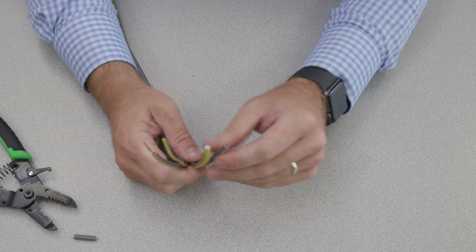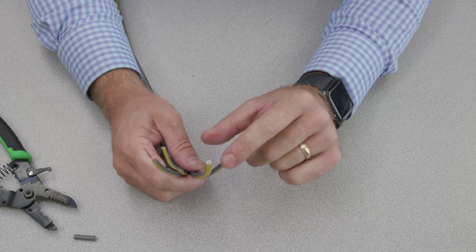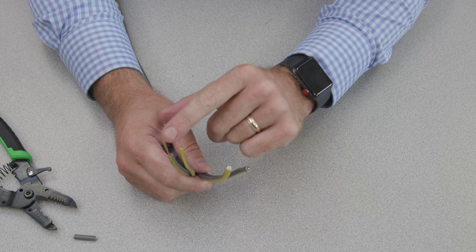Now you'll notice here that we have two conductors for line voltage, one for ground, and one for your communication wire.